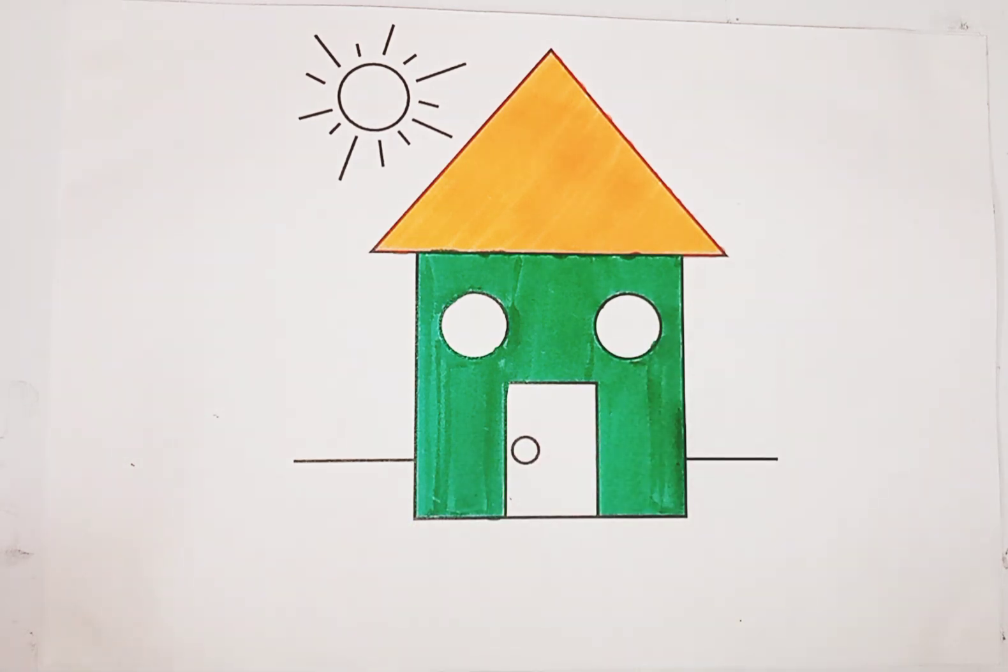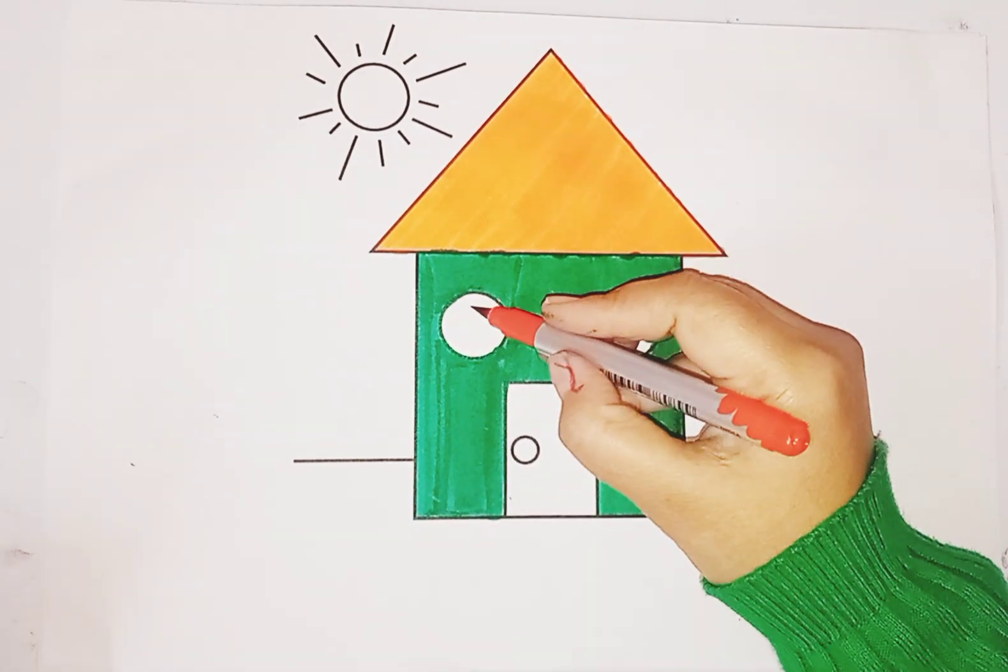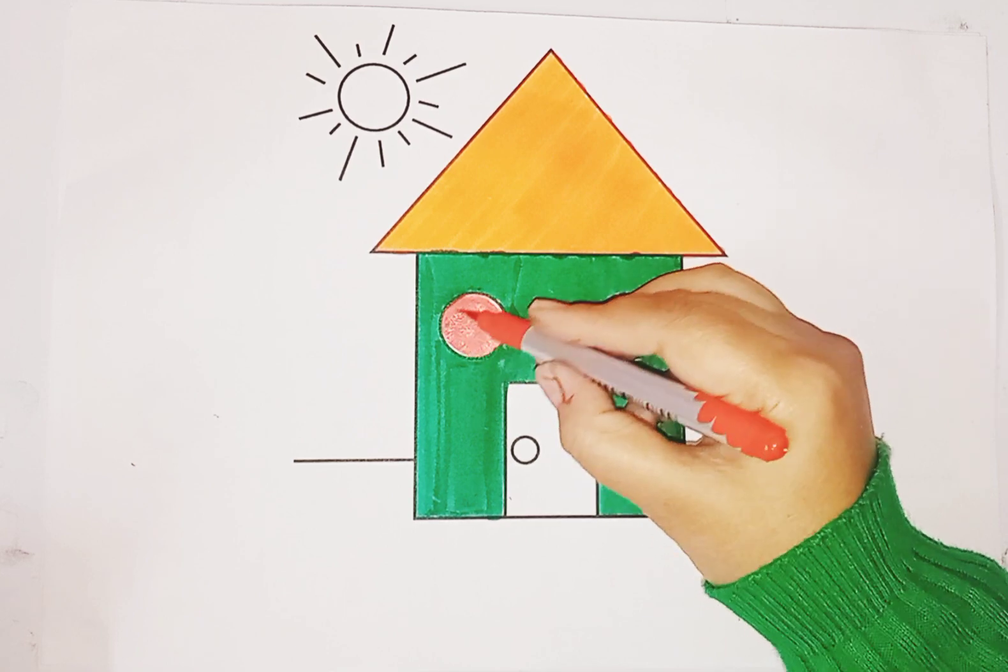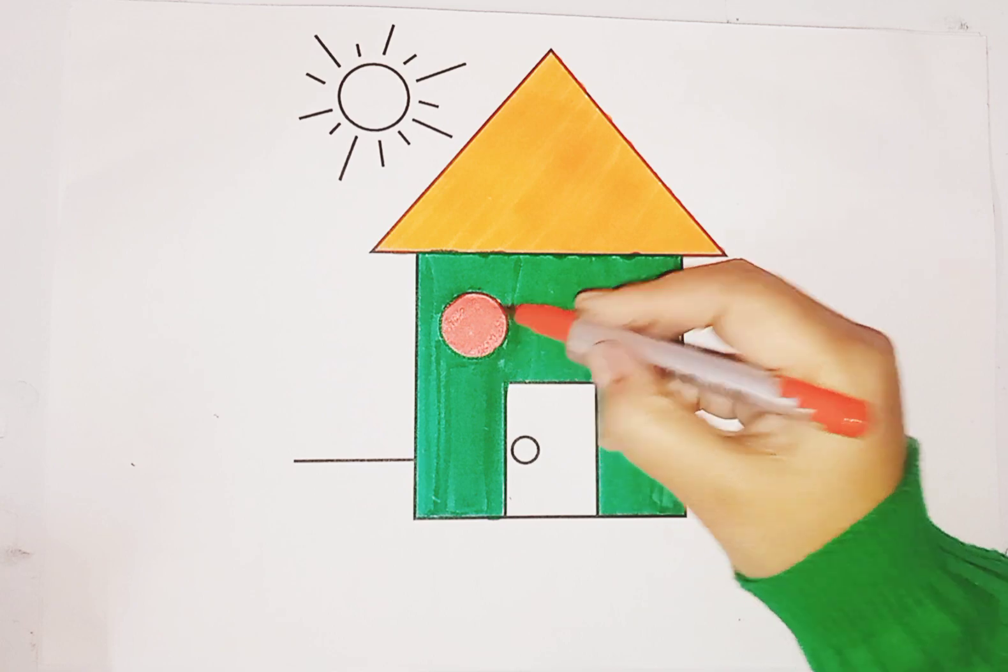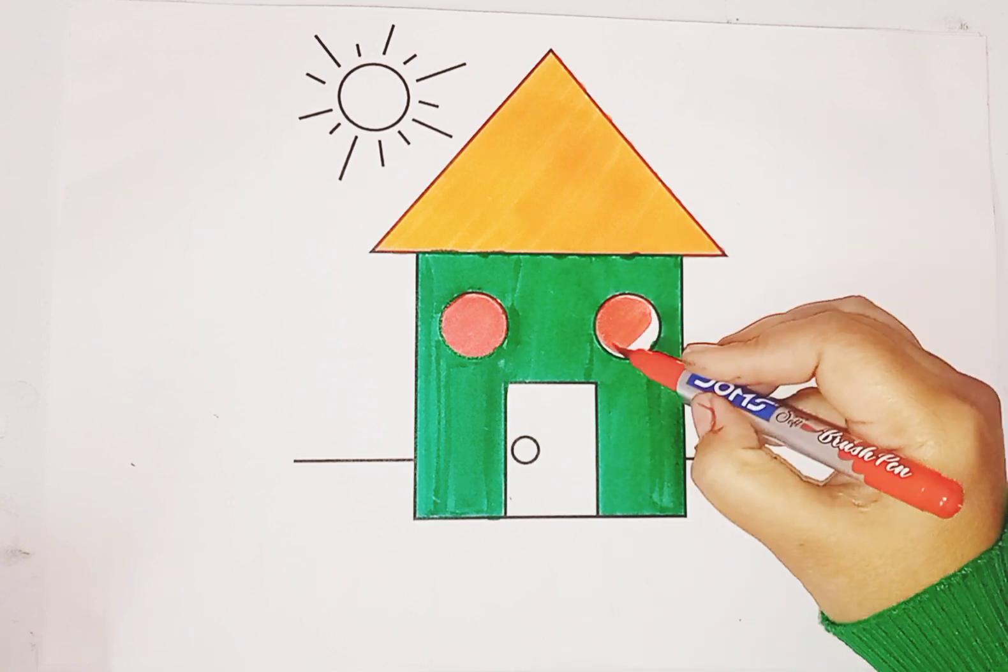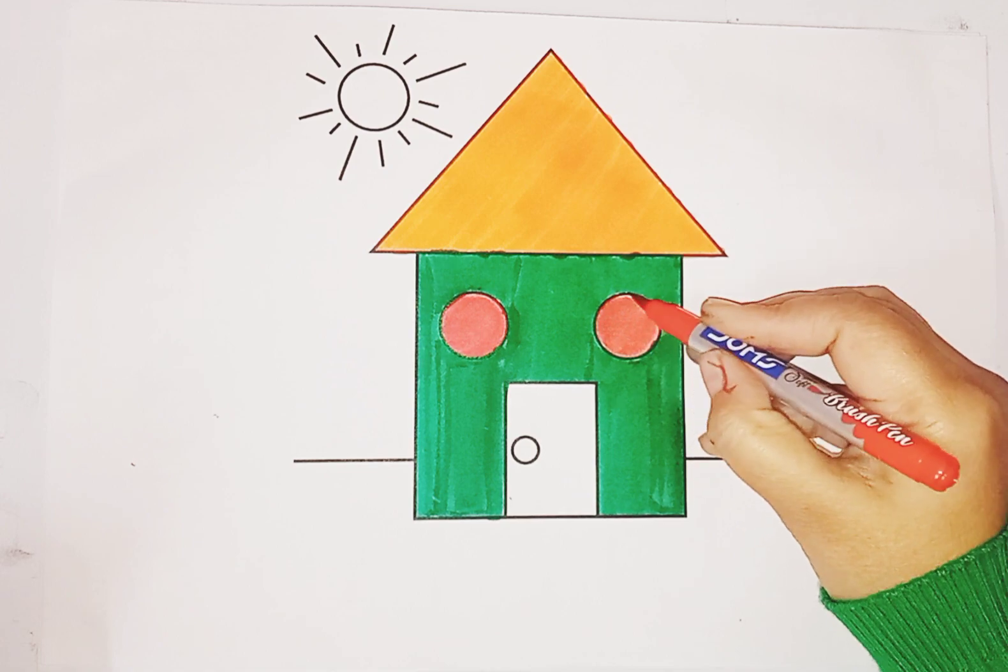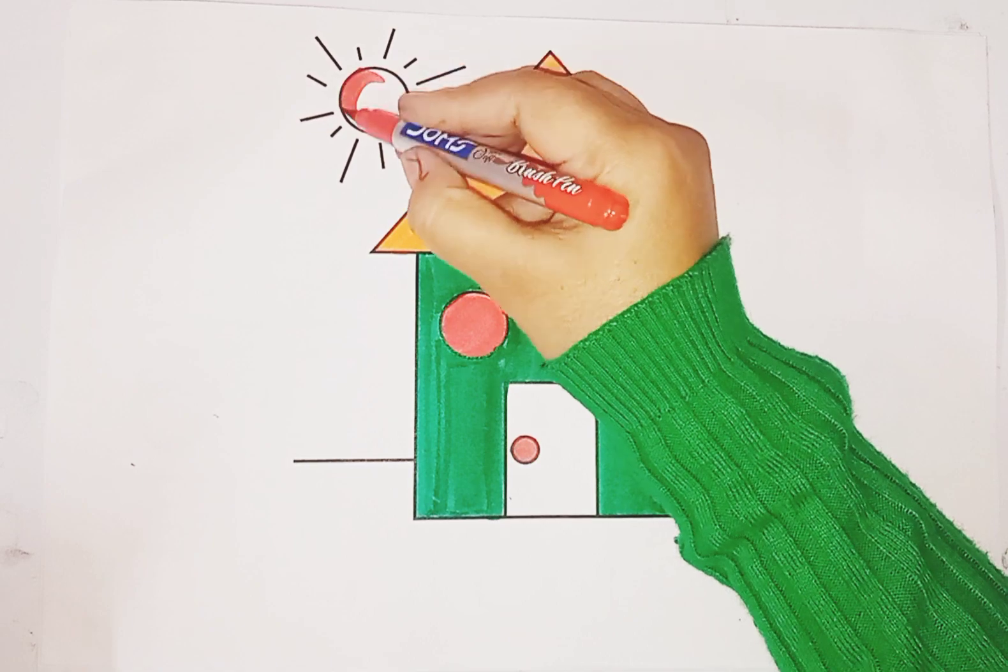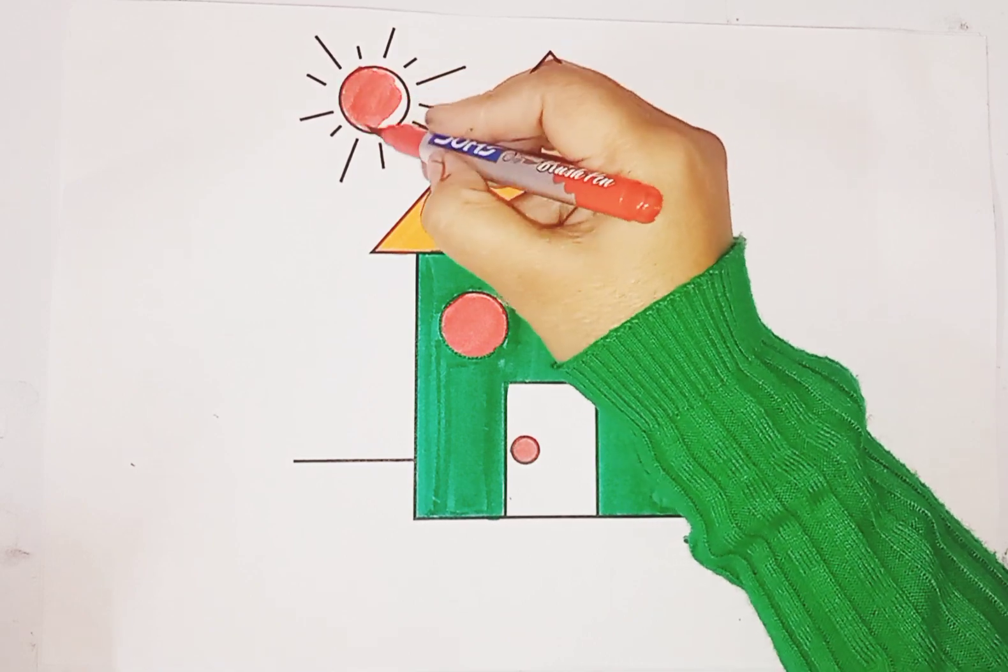Now we'll do red color in the circle. This is a circle and the shape house window. Here it's circle, here it's circle, so we'll use red color on all the circles.